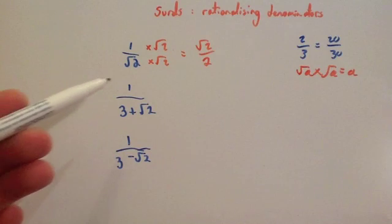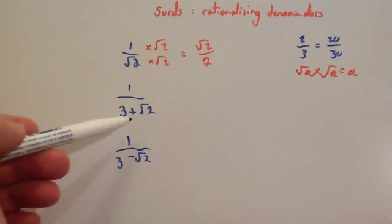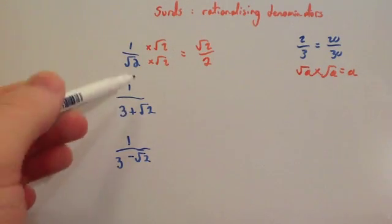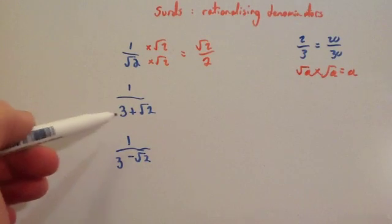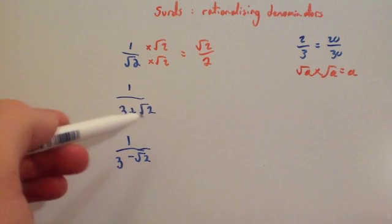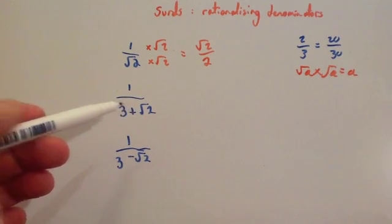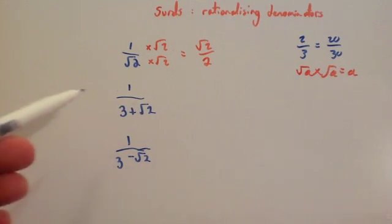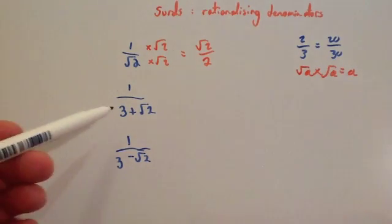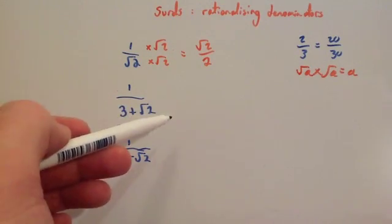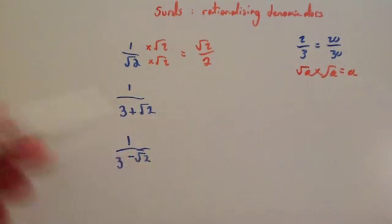This one here — what you would do is times the bottom by the conjugate of the bottom line if you've got two terms. So if you've got a whole number and another surd, or even two surds, or two terms on the bottom line with two surds added together, you times it by the conjugate. So you would times it by the same thing as what's on the bottom line, but instead of a plus sign, a minus sign — or if it was a minus sign, a plus sign.